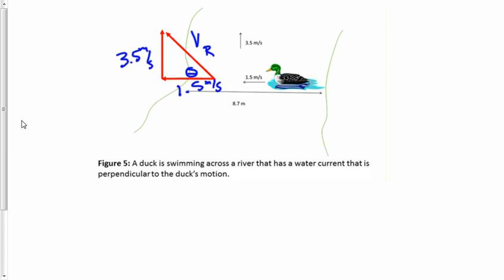So that's just going to be v sub r is equal to the square root of 3.5 squared plus 1.5 squared. And v sub r is equal to 3.8 meters per second.